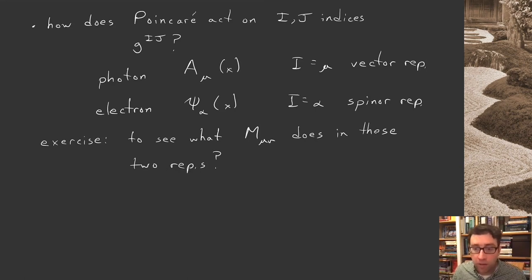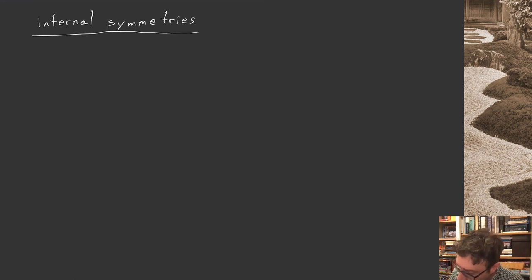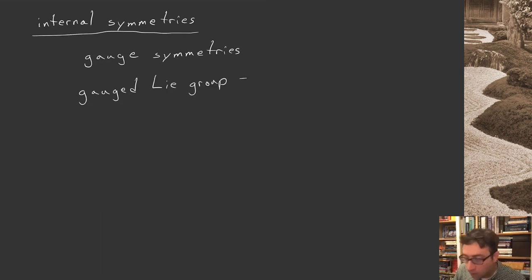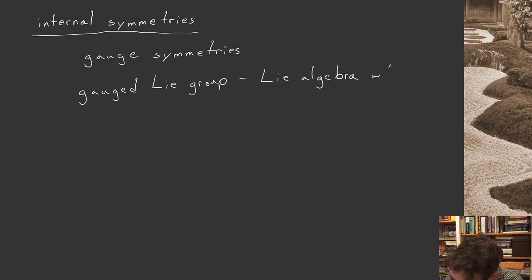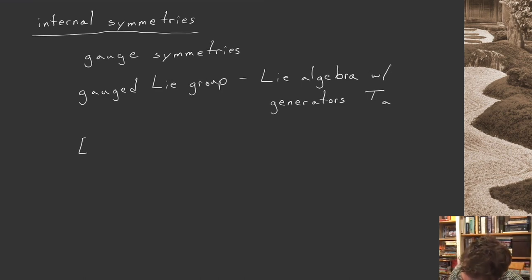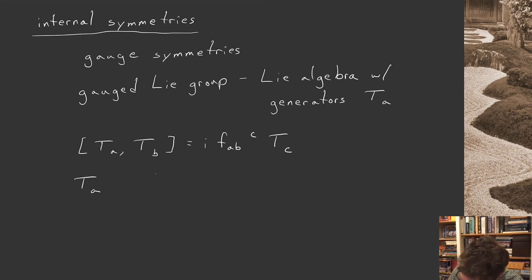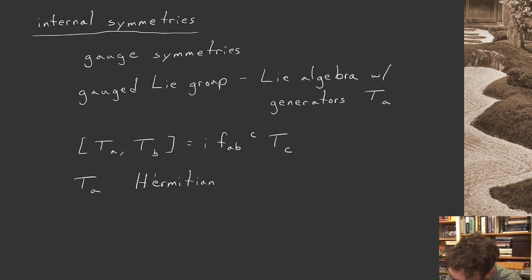That's all for the review of the Poincaré group. Now let's discuss internal symmetries. The most important examples are gauge symmetries, which depend on some gauged Lie group. Given this continuous internal symmetry, there's an associated Lie algebra with generators T_a. Just like for Poincaré, you can compose the Lie algebra elements using a commutator: [T_a, T_b] = i f_{abc} T_c, where f_{abc} are the structure constants. We work in conventions where generators are Hermitian.